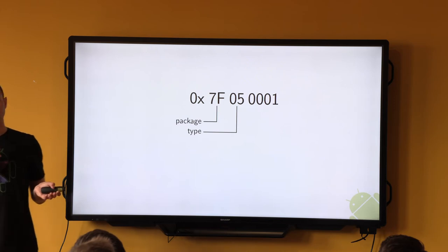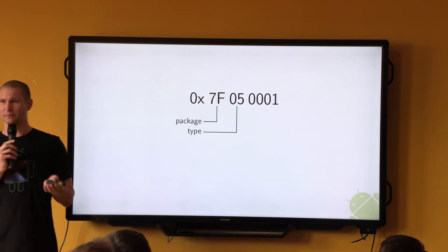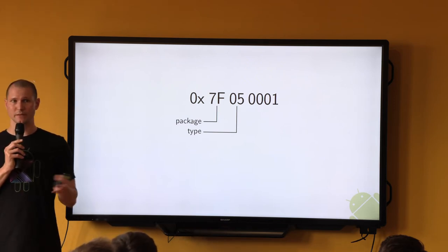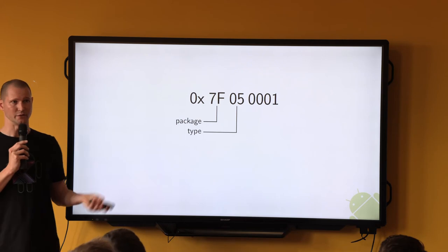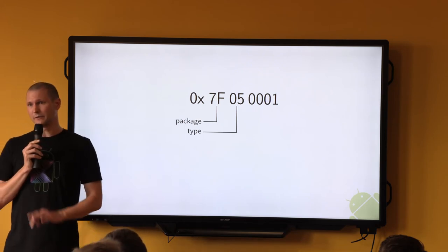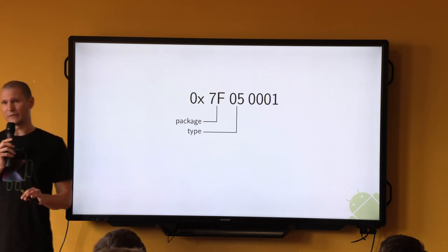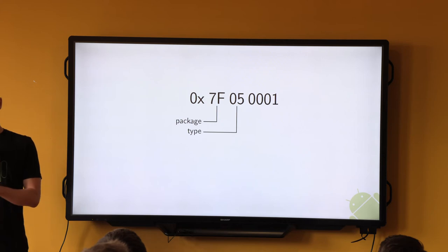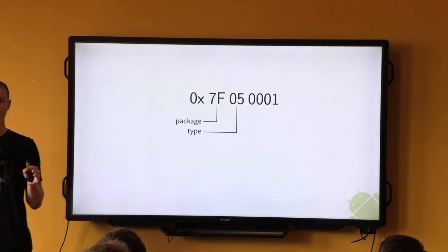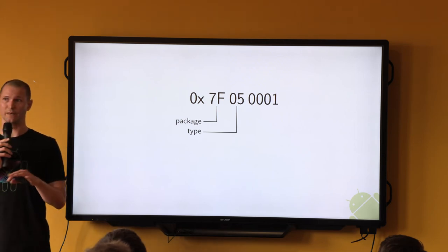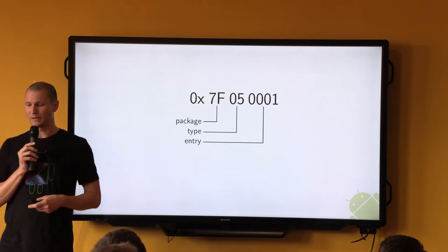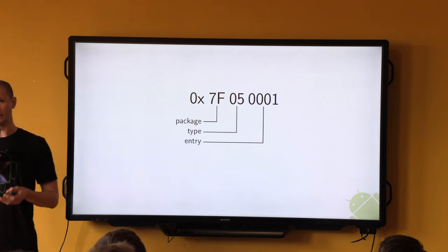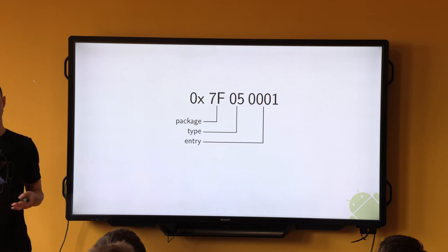The next few bits correspond to which type of resource we're dealing with — this tells us if it's an integer or a string or whatever. There's no fixed mapping between resource types and numerical values, but within the same APK every resource of the same type will have the same numerical identifier. And finally there's the entry number, which is just a running number.